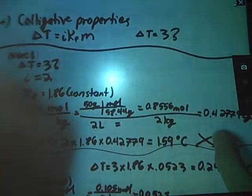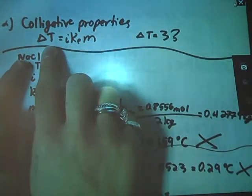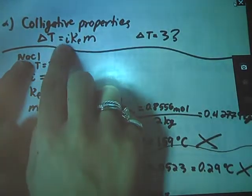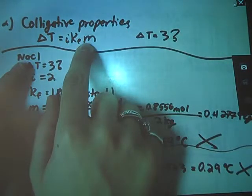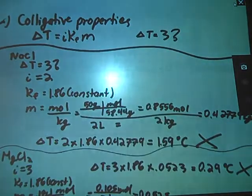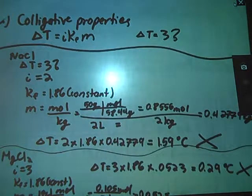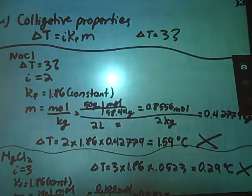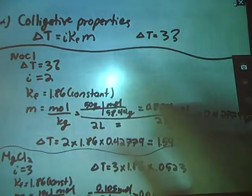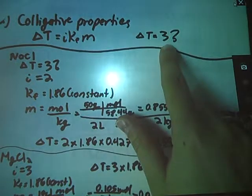So this is a colligative properties problem. This is the formula for colligative properties: change in temperature equals Hoff factor times constant times molality. The constant, it can be Kf, since this is a freezing point depression problem, or Kb if you were elevating the boiling point. And we're hoping my delta T is going to equal 3.